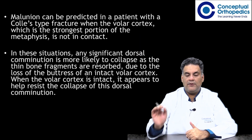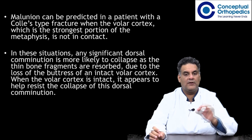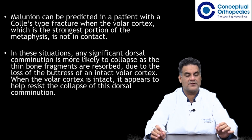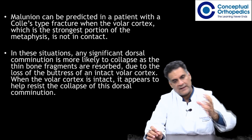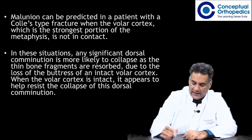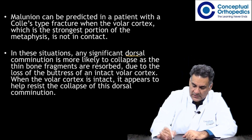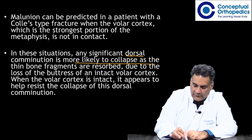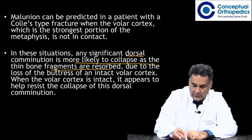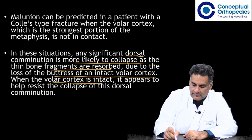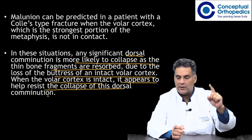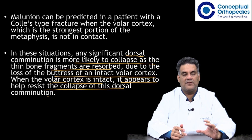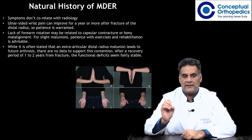Malunion can be predicted in a Colles'-type fracture when the volar cortex — the strongest part of the metaphysis — is not in contact. If the volar aspect is not in contact, malunion is likely. Significant dorsal comminution is more likely to collapse as thin bone fragments lose the buttress of the intact volar cortex. When the volar cortex is intact, it helps resist collapse of dorsal comminution.